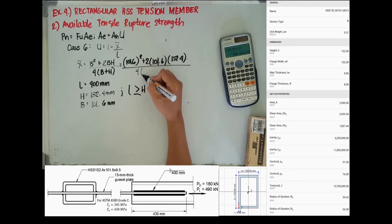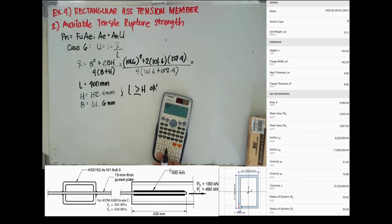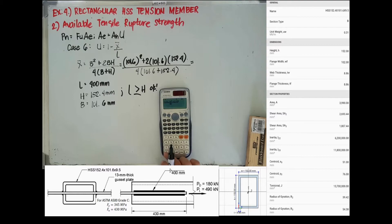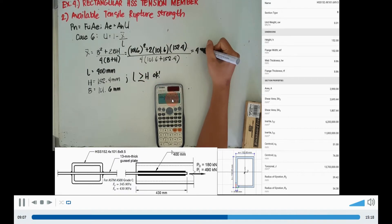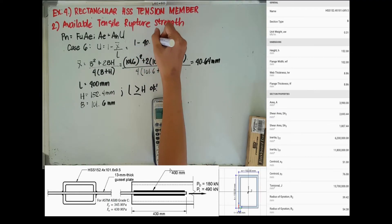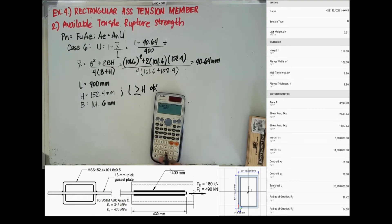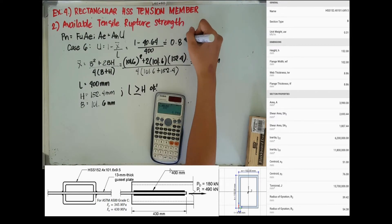Substituting the values with the given, our x bar now is equal to 40.64 millimeter. So our shear lag factor would now be equal to 0.898.